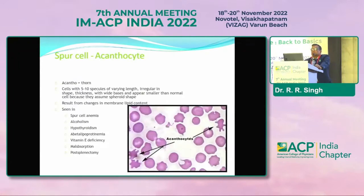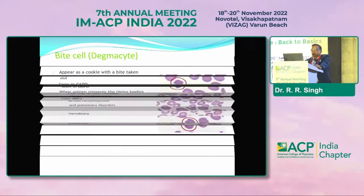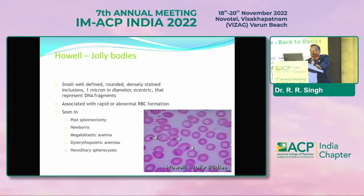Spur cells, also known as acanthocytes, have small spurs like osteophytes and are seen in vitamin E deficiency, malabsorption syndrome, and post-splenectomy. Bite cells, also known as degmacytes, appear like a cookie with a bite taken out and are seen in G6PD deficiency — especially after taking certain drugs like chloroquine with raised serum bilirubin, prompting a G6PD test. Stomatocytes on dry smear have a central slit or stoma, seen in liver diseases and certain malignancies.